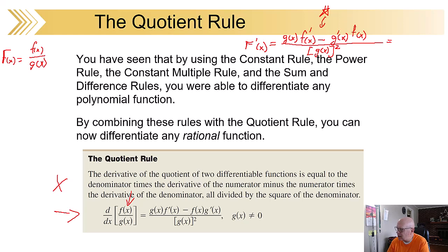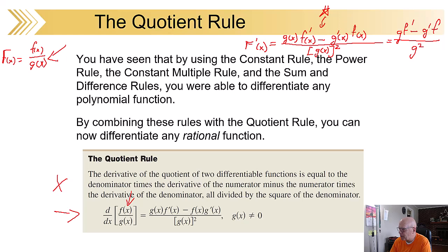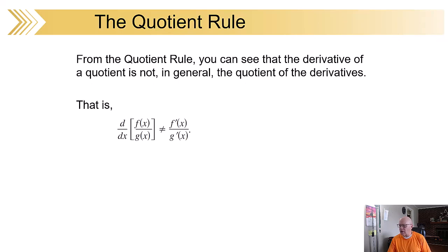If you want to shorten that just a bit for memorization purposes: g·f prime minus g prime·f, over g squared. A little bit shorter and might be easier to memorize. Remember, you've got a minus on the top and g squared on the bottom. If you can keep that straight from the product rule, you'll be in good shape. Make sure some of your practice includes going back and forth between the product rule and the quotient rule, and practice does make better.